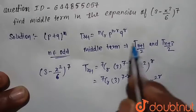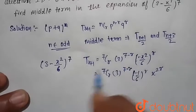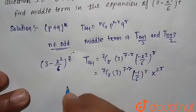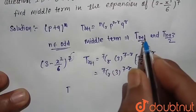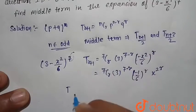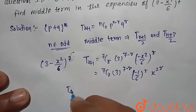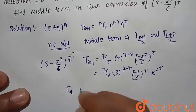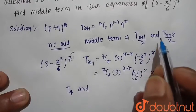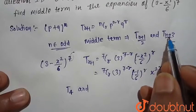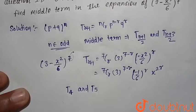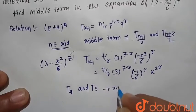Now we find the middle terms. Since 7 is an odd number, the middle terms are T_(7+1)/2 = T_4 and T_(7+3)/2 = T_5. So T4 and T5 are the middle terms.